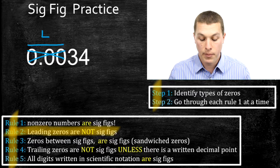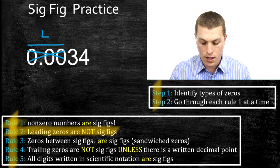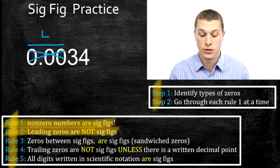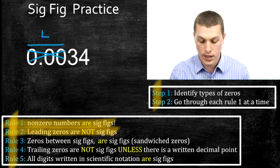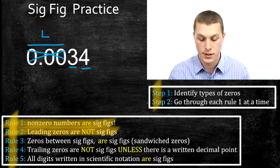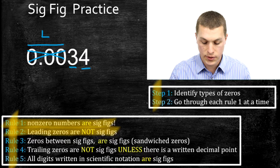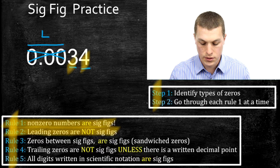On the other hand, by rule one, we know that non-zero numbers are significant, and three and four are both non-zeros. So how many sig figs do we have? One, two — so two total sig figs.